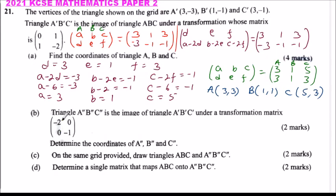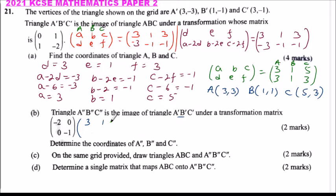We go to part B. Triangle A''B''C'' is an image of triangle ABC under the transformation matrix [-2, 0; 0, -2]. To find the coordinates, we multiply this matrix by the matrix formed by A, B, C, which is [3, 1, 3; -3, -1, -1].